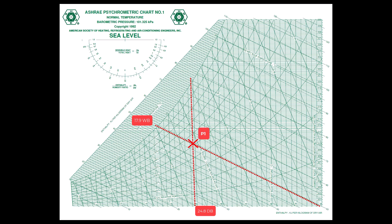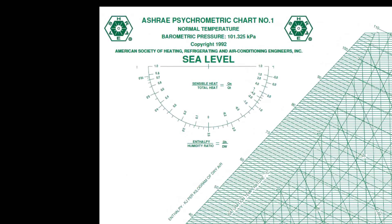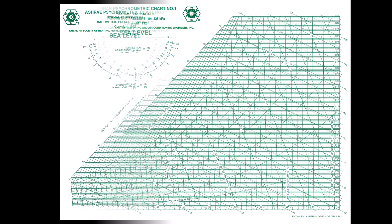Point 2 has a dry bulb of 13°C, so we can draw that on the vertical line, but we need to find the wet bulb — we don't have that data. So we go to the protractor. In the protractor we have the information for the sensible heat ratio, which is 0.88. We intersect the midpoint to 0.88, and that gives us the slope.